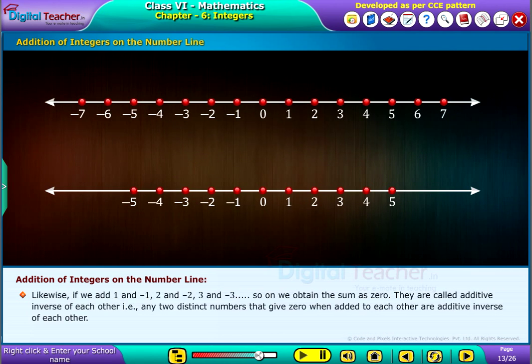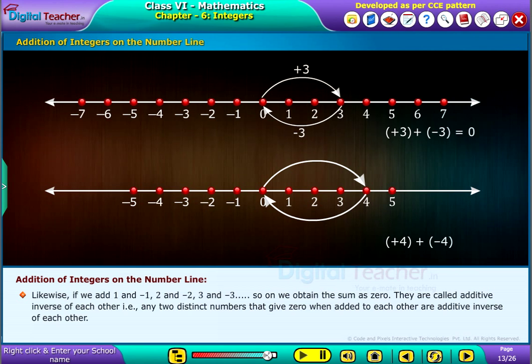Likewise, if we add 1 and minus 1, 2 and minus 2, 3 and minus 3, and so on, we obtain the sum as 0. They are called additive inverse of each other, that is, any two distinct numbers that give 0 when added to each other are additive inverse of each other.